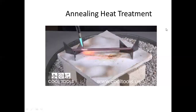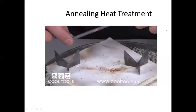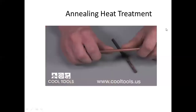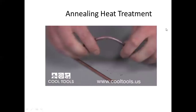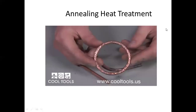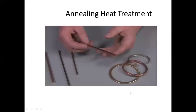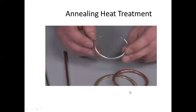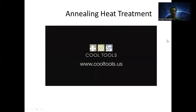Turn your torch off and let the piece cool. After letting it cool for a few minutes, it's ready to work with. Before annealing, bending the copper rod was very difficult, but after annealing it bends rather easily, allowing you to comfortably design and create. Using the annealing technique, you can work with a variety of thick metals comfortably and easily and create beautiful one-of-a-kind jewelry. Visit the learning center at www.cooltools.us for more jewelry making videos.